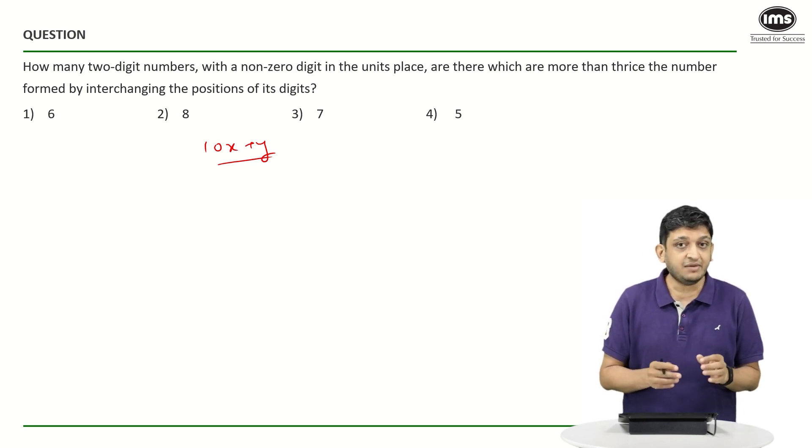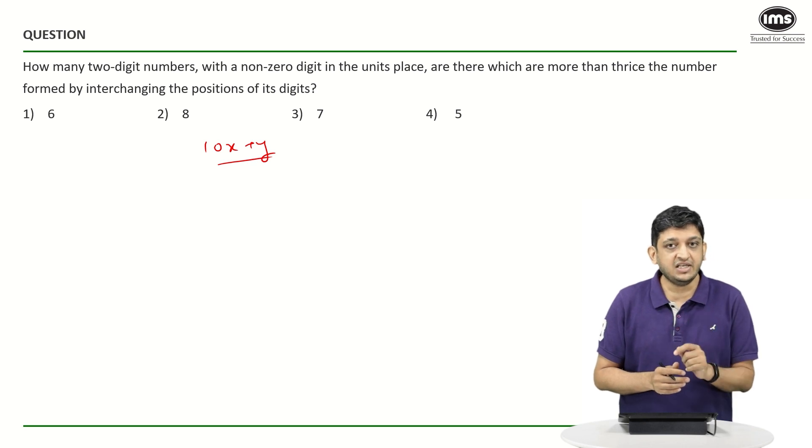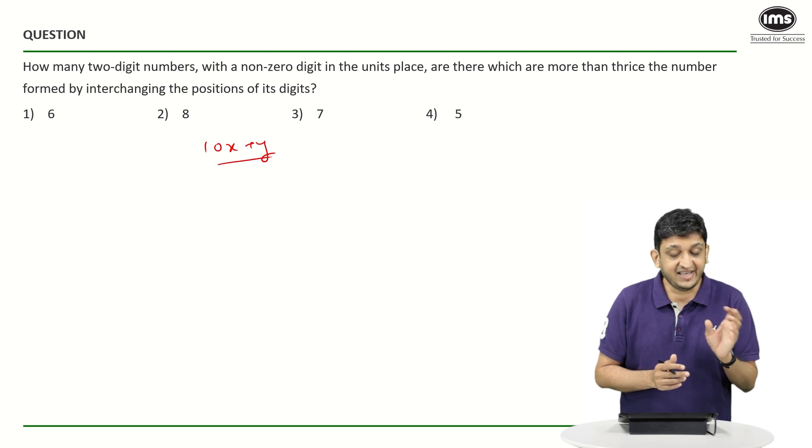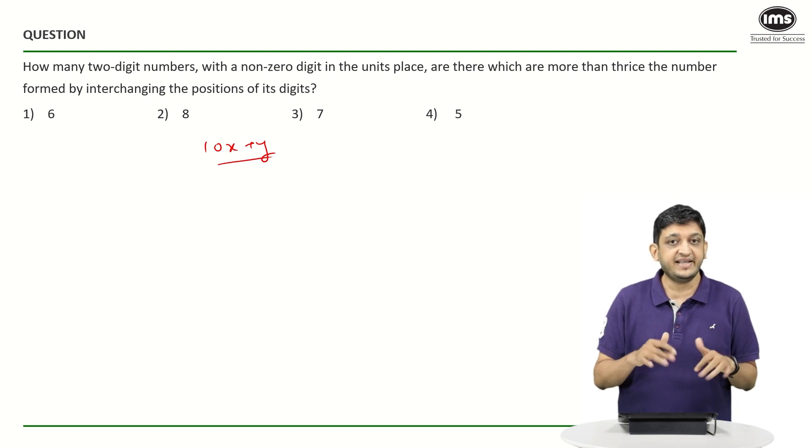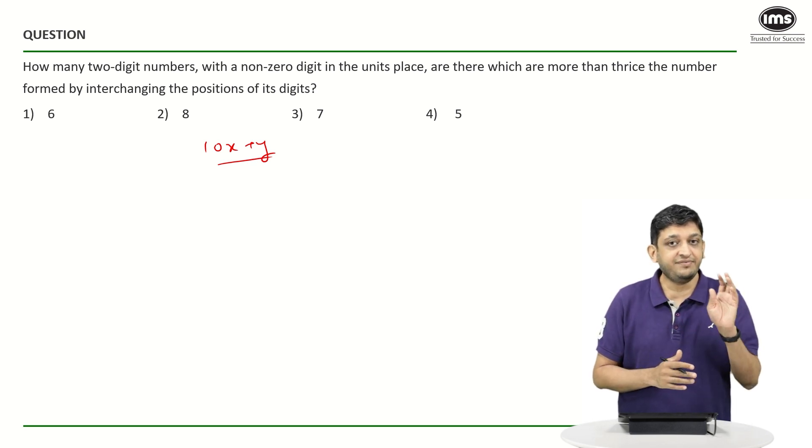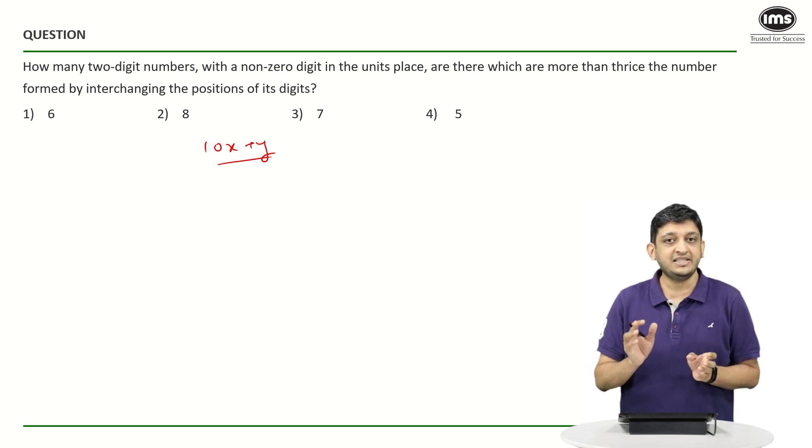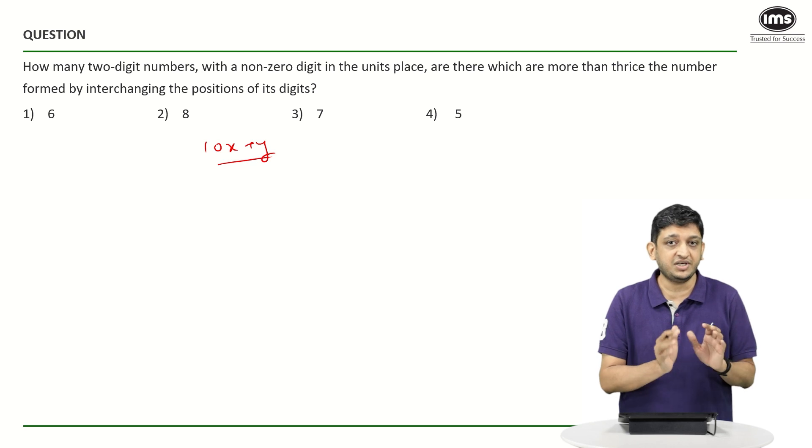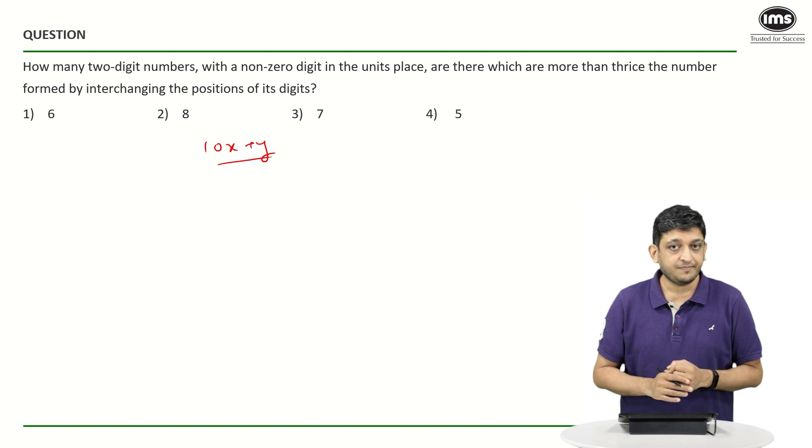Whereas if you write the number as 10X plus Y, it will tell you that X and Y are two single-digit numbers. The X that we have here is at the tens place, so the face value X will be multiplied by the place value 10 to give you 10X as the value of that particular place. And then Y being at the units place, the value of that number is going to be Y itself. So if you have to construct the number, you will construct it as 10X plus Y.